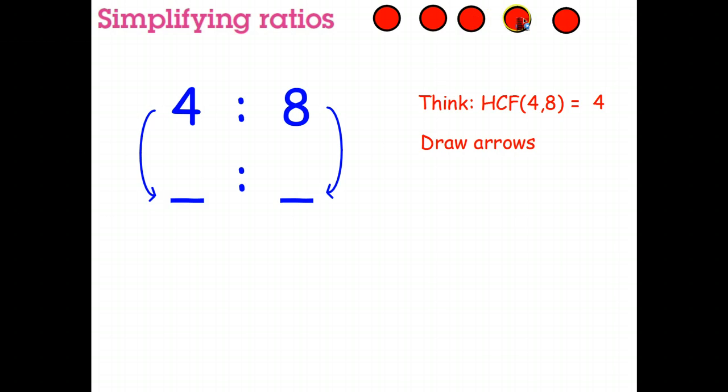So the highest common factor is four. So we're now going to divide by four. And last step is do the calculation and we get the simplified answer, one is to two. So that's how we go about simplifying ratios. So let's go ahead and try a couple on our own.